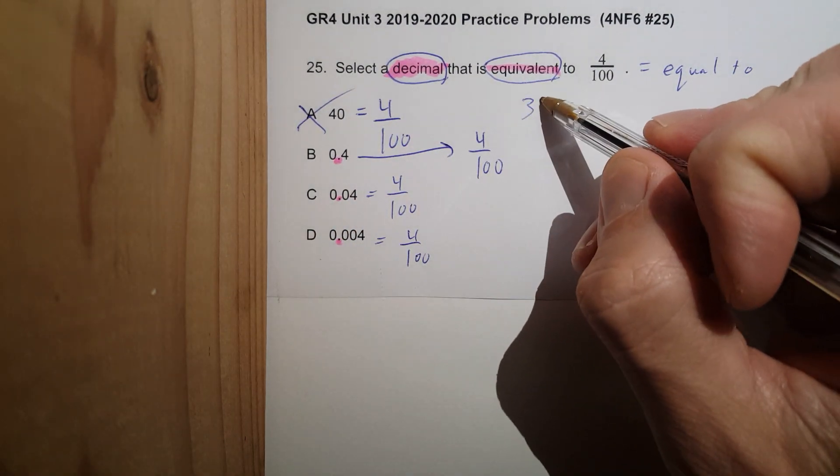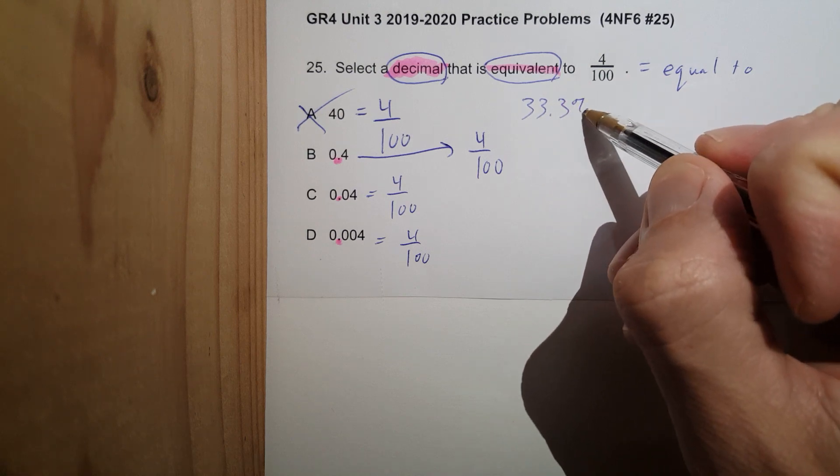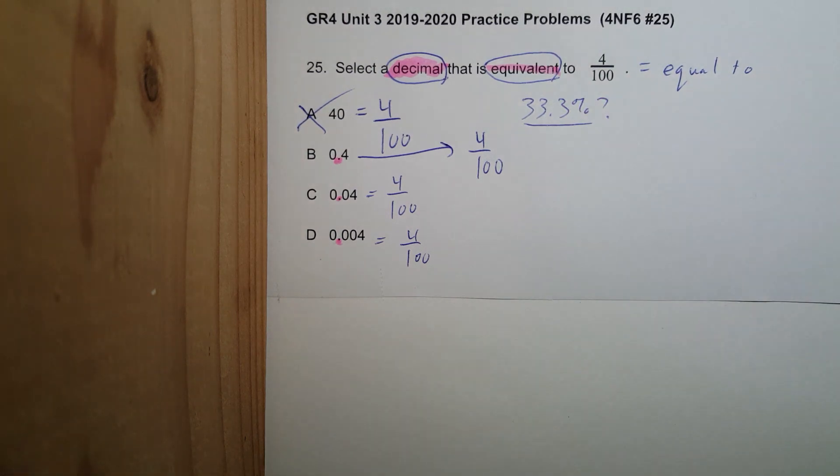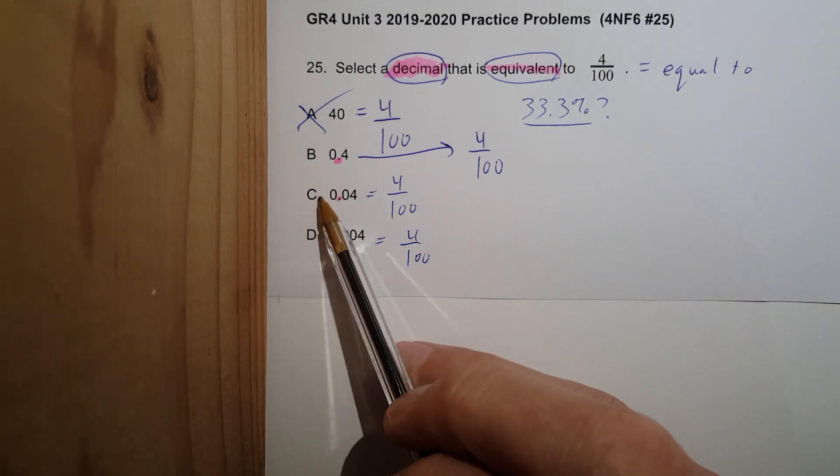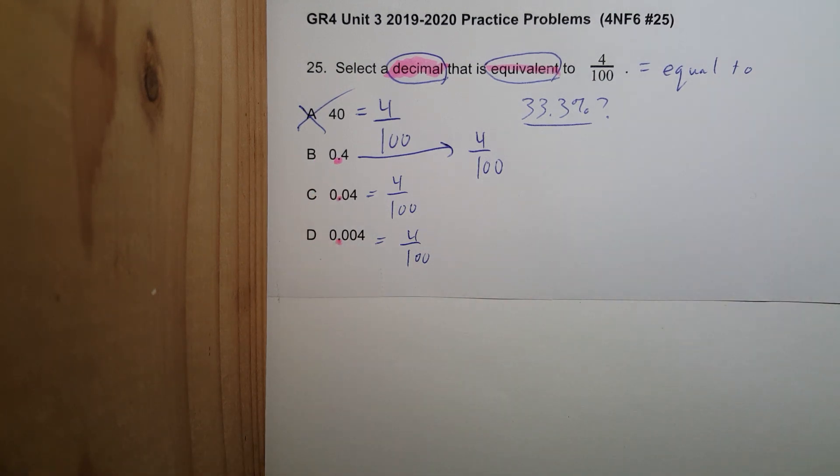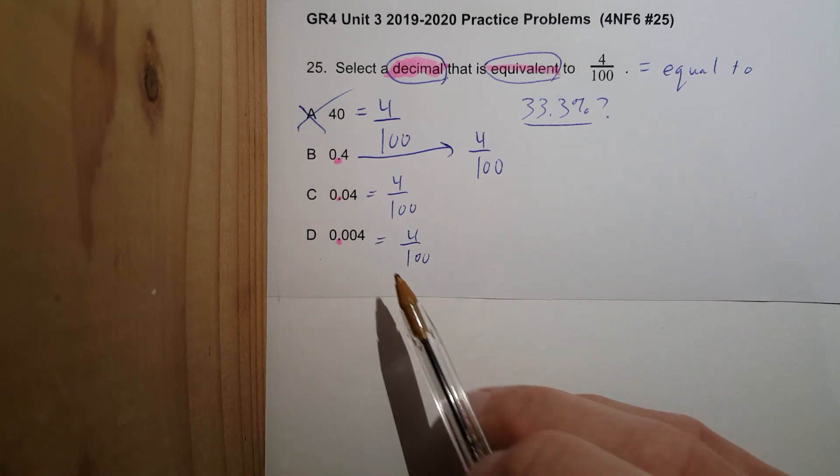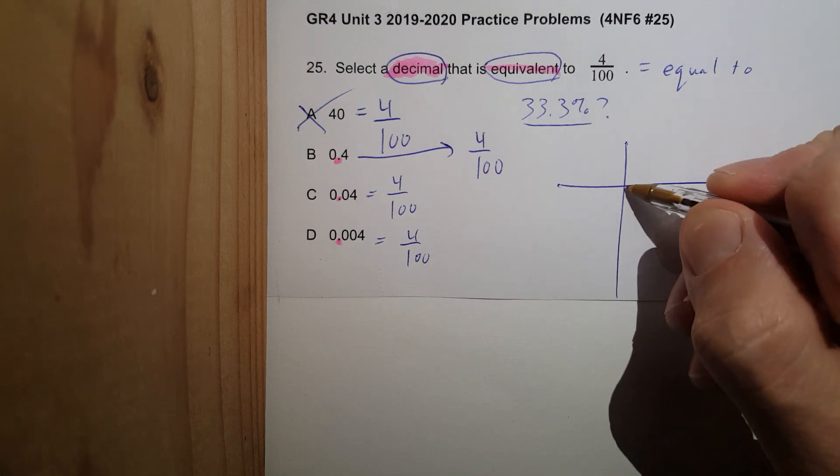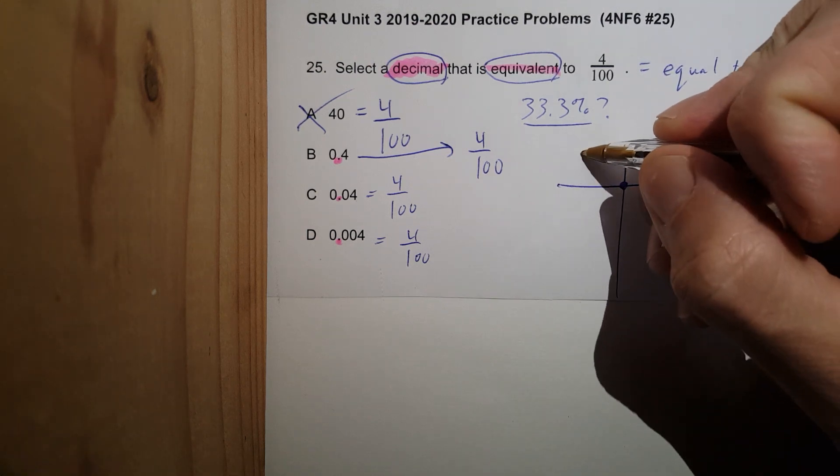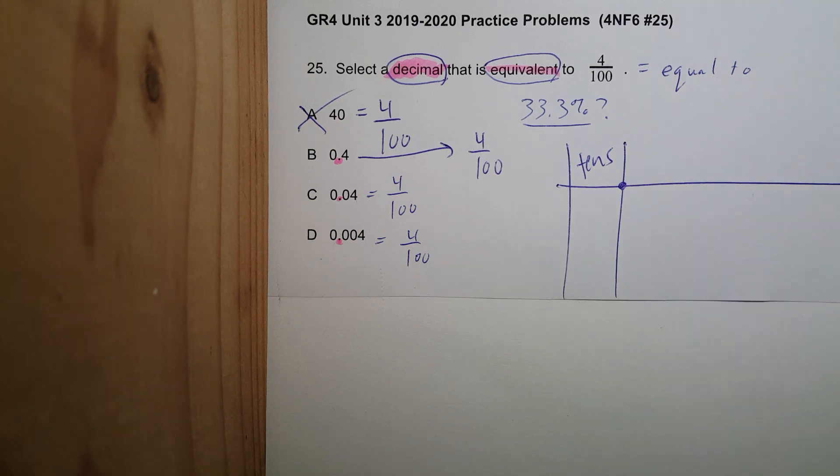Now you have a 33.3% chance of getting this correct. Why? You have one, two, three choices. Four tenths, four hundredths, four thousandths. Let's say that again. Place value chart, your best friend forever.